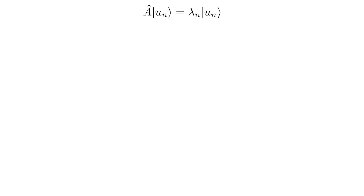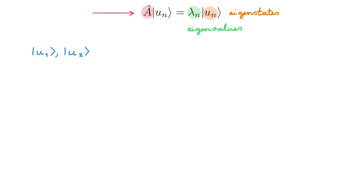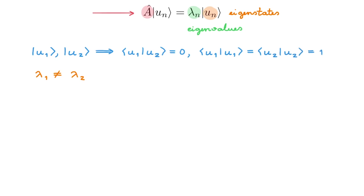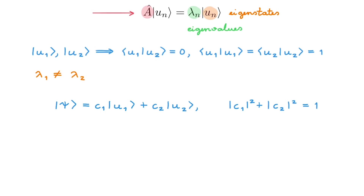What I want to do today is to compare these two types of probability and hopefully convince you that how probability features in quantum mechanics is fundamentally different to how it features when we only have partial information about a system. There are problems in which both types of probability are important, and what we'll see today is how pure and mixed quantum states are all we need to describe both. Let's start with a simple example. Imagine that we have an observable A associated with some physical property and that this is its eigenvalue equation, where lambda_n are the eigenvalues and u_n the eigenstates.